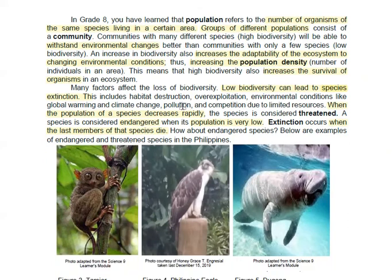Many factors affect the loss of biodiversity. If biodiversity is low, it will lead to species extinction. When the population of a species decreases rapidly, the species is considered threatened. They are also considered endangered because the population is very low, and can eventually become an endangered species.